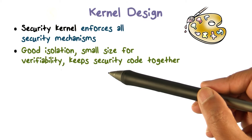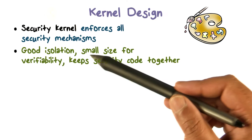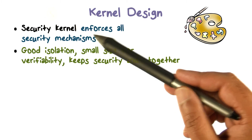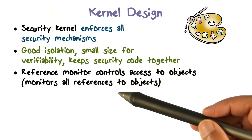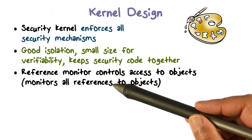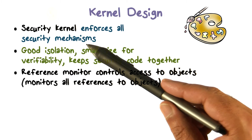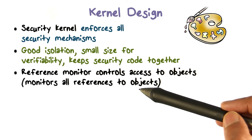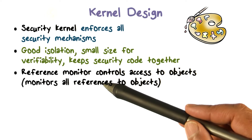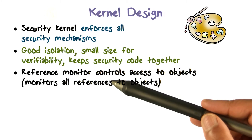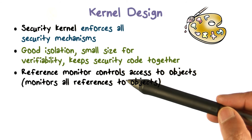Kernel design basically says: look for the smallest possible system where you can put your security mechanisms. The reference monitor controls access to objects, where all references are monitored. Enforcement of all security mechanisms — access to protected objects or resources — is one of those. So the reference monitor function has to be one that the security kernel addresses.